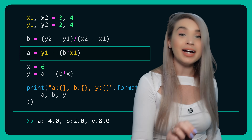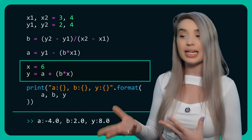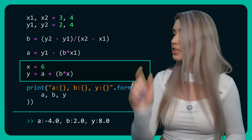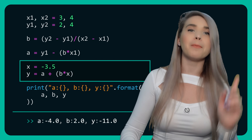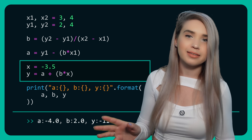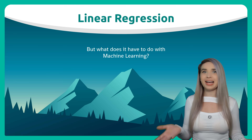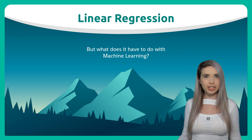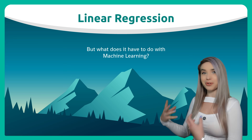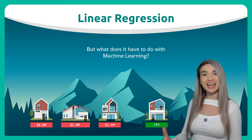And then finally we will use the linear regression formula to calculate the y value of any x — x could be 6, or minus 3 and a half, or any number you'd like. But what does it have to do with machine learning? Well, imagine that instead of locations we are trying to predict the value of a house in Vancouver.